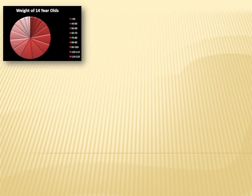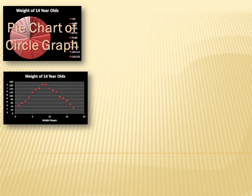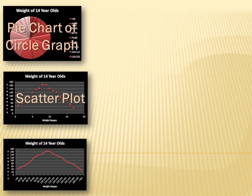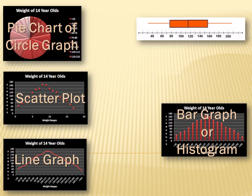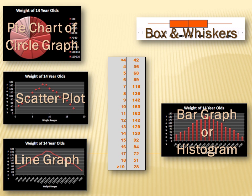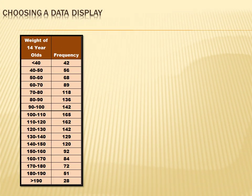There's a pie chart or circle graph, a scatter plot, a line chart or line graph, a histogram or bar chart, a box and whisker, or a stem and leaf. There are all kinds of ways you can summarize this data. Which would you choose? Fortunately or unfortunately, there's not a simple set of rules to follow — you've just got to use your judgment.